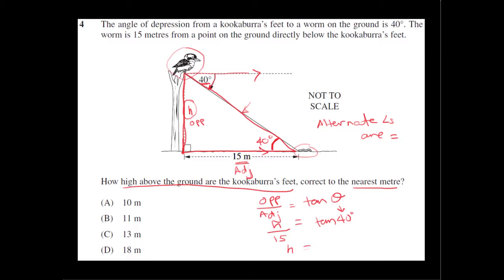So to make H the subject, we need to get rid of this 15. So we're going to multiply the left-hand side by 15, so it cancels out. And what we do to the left, we must do to the right. So multiply the right-hand side by 15, and we get 15 tan 40 degrees.